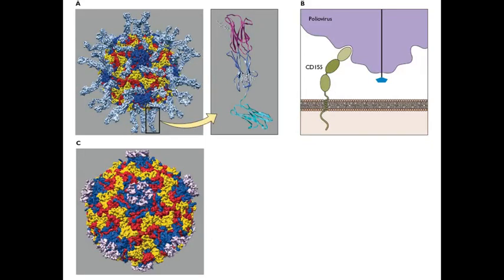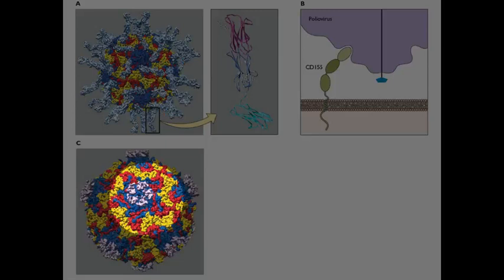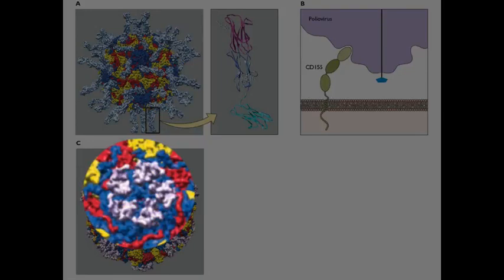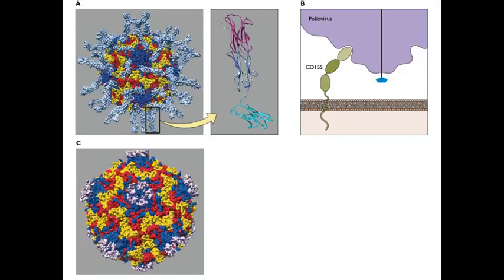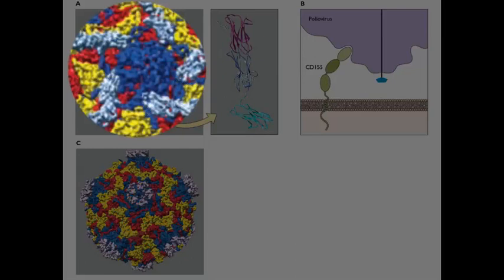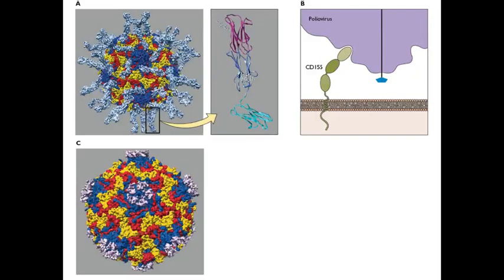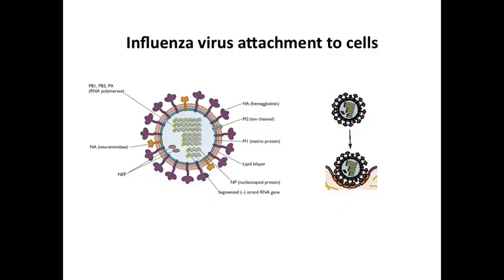Here is rhinovirus, a member of the same picornavirus family — also an icosahedral virus. The receptor for this type of rhinovirus is the low-density lipoprotein receptor. A soluble form was again produced and bound to the virus. In this picture you can see it binds to a different location — up on what we call the plateau — rather than in the canyon as poliovirus does. So there are multiple places receptors can bind on capsids: in canyons or on the surface.